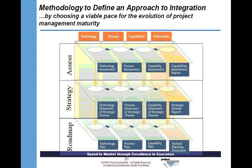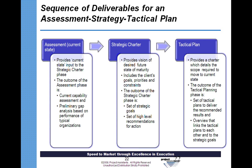An assessment provides current state input to the strategic charter. The outcome is a current capability assessment and a preliminary gap analysis based on the performance of typical organizations — showing how our clients have progressed and matured over time. The strategic charter — the vision of the future — includes goals, priorities, and constraints, resulting in high-level recommendations for action. The tactical plan is a charter: the scope required to move to the future state.